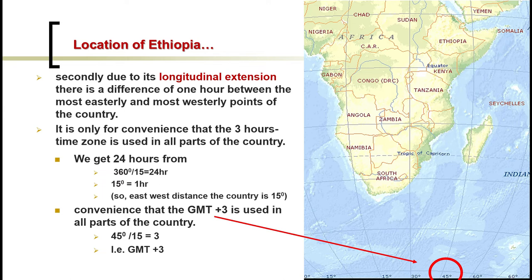For the matter of convenience, Ethiopia uses GMT+3. This is because the meridian line that crosses Ethiopia is around 45 degrees. Since we have 24 hours and 360 degrees divided by 15 gives 24 hours — meaning one hour equals 15 degrees — when 45 degrees is divided by 15, we get 3. Therefore GMT+3 is the standard time used for Ethiopia.